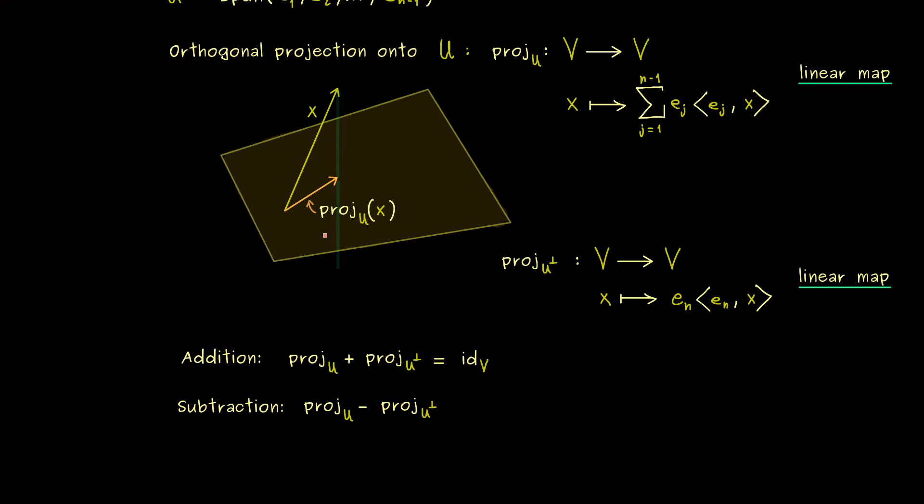However, now in the picture here, you see the subtraction means that we land with our result below the subspace U. So what you could say is that we reflect the vector on the subspace U. So you could see it as a mirror, and then we have a reflection going on. And indeed, we could also rewrite that as identity minus 2 times the one projection. So if we subtract 2 times the normal component here, we land at this position which gives us the reflection. But now the important thing for us is that this is also a linear map.